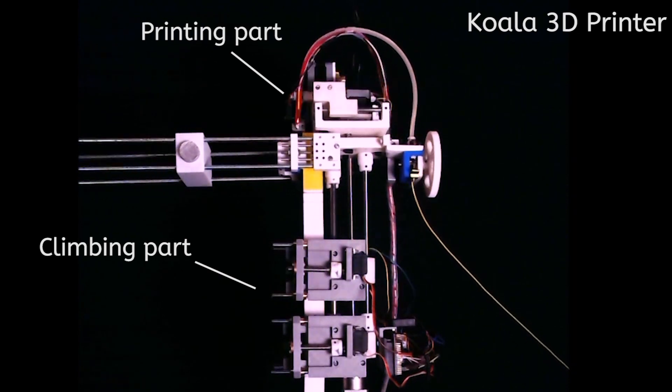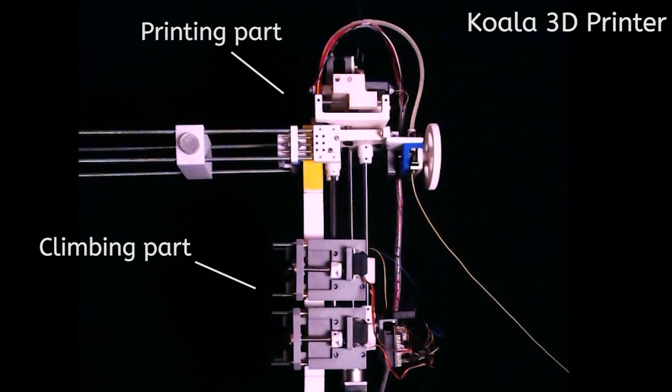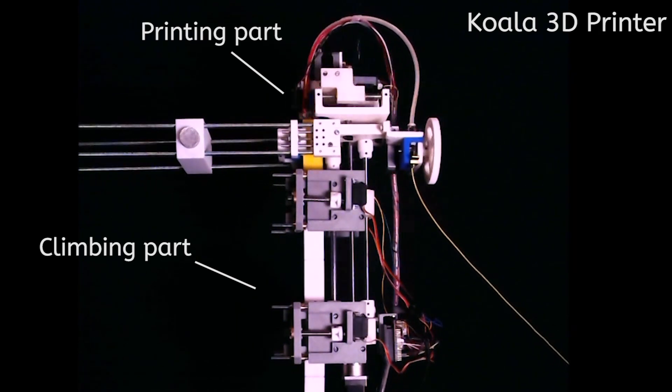In this video, we show Koala while printing a column larger than itself. The machine's function is comprised of a climbing stage and a printing stage.